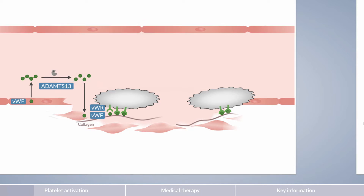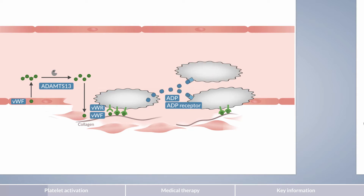Platelet adhesion also results in the release of chemical messengers stored in platelets. A very important chemical messenger is adenosine diphosphate, in short, ADP. Platelets have an ADP receptor, from which additional inactive platelets become activated. This results in positive feedback, which initiates a chain reaction of platelet activation.